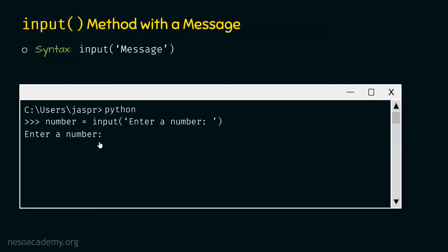Now the user can type the number. Let's say the input is 20. As soon as we hit enter, we get the prompt again. We can type number and check whether it has received value 20. We hit enter and we get value 20 on the screen. But we can observe that this value is received as a string, because it is wrapped within single quotes — no matter what, even an integer input will be treated as a string by Python.